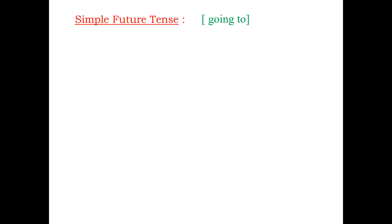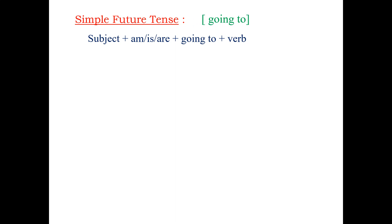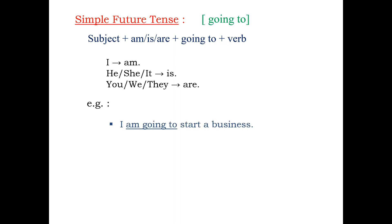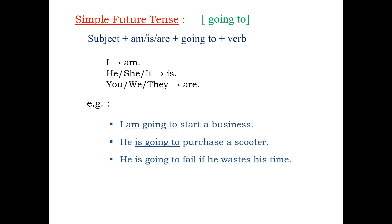Next is the usage of simple future tense with going to form. The sentence is formed with subject plus am or is or are plus going to plus verb. Subjects like I are used with am; he, she, it with is; you, we, they with are. Examples: I am going to start a business. He is going to purchase a scooter. He is going to fail if he wastes his time. I am going to start a business — that will be in future. He is going to purchase a scooter — also in future. He is going to fail if he wastes his time means if he doesn't study, he will fail, which is also in future.